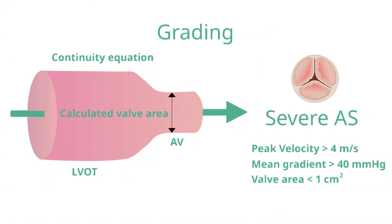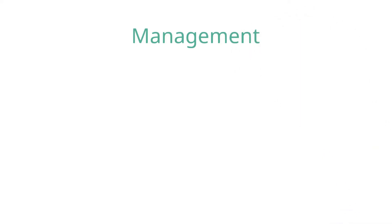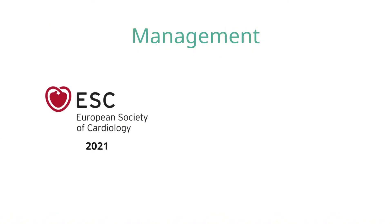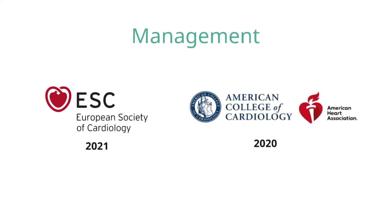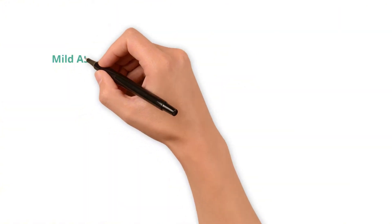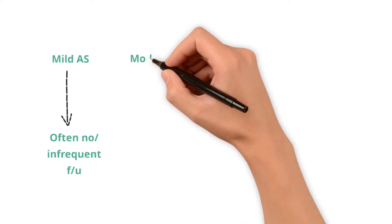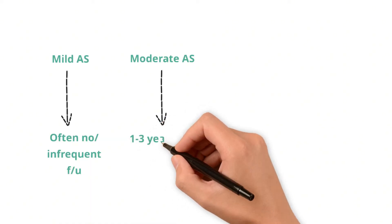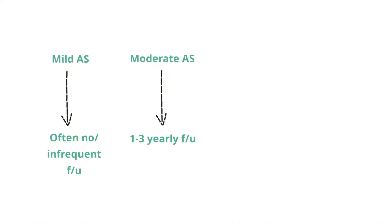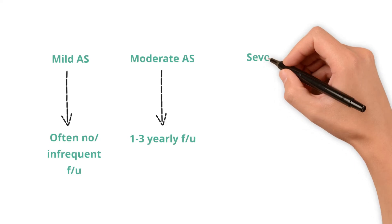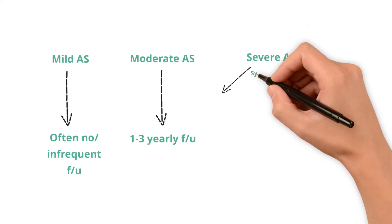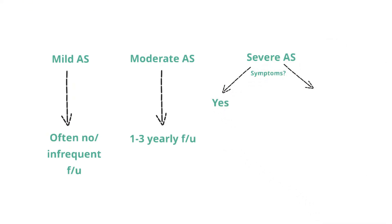These are the three key values for grading severity, although there are other measurements routinely performed. The management of aortic stenosis depends on its severity. Mild aortic stenosis requires no specific action and is either not followed up or followed up infrequently in younger patients. Moderate aortic stenosis is followed up regularly with repeat echocardiograms on a one-to-three yearly basis, usually closer to yearly for those approaching severe criteria. If a patient is diagnosed with severe aortic stenosis, the first step is careful evaluation of symptoms; if the patient has symptoms, valve intervention is recommended.